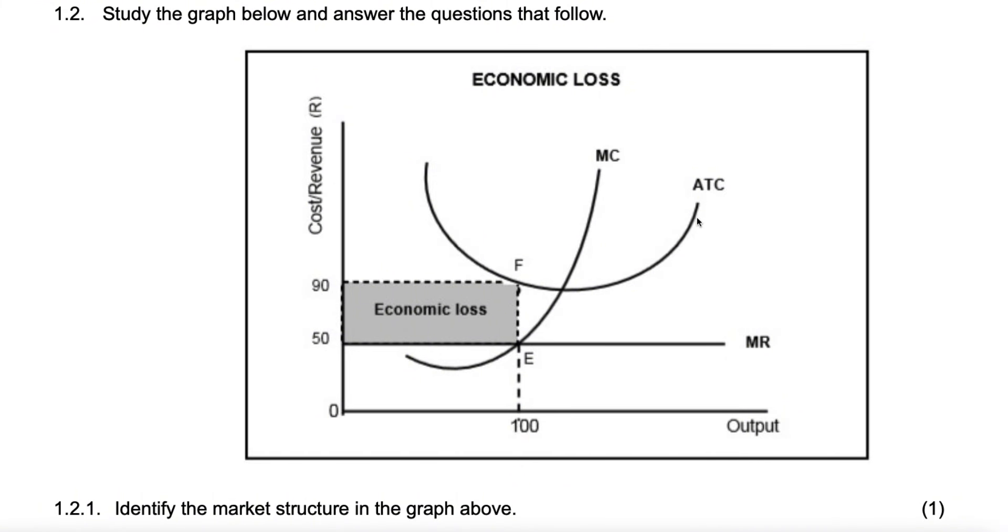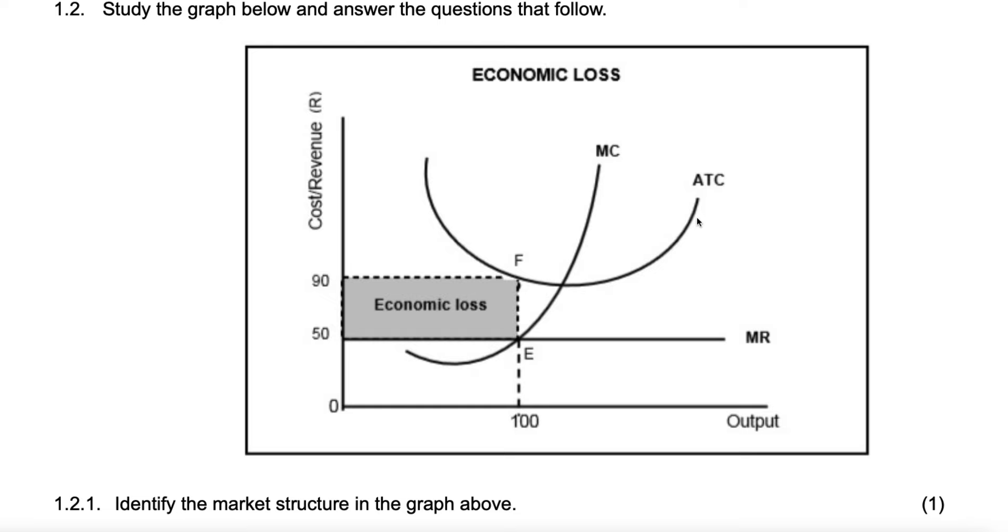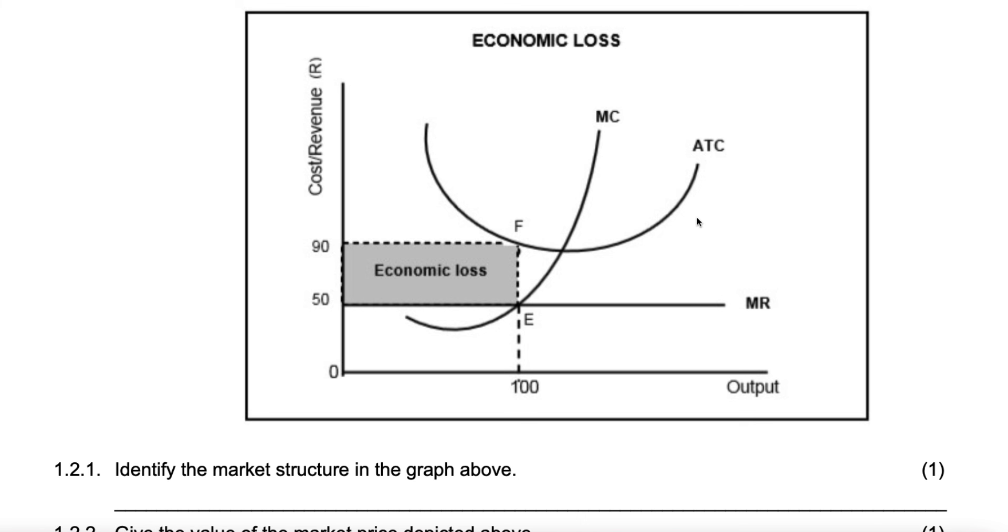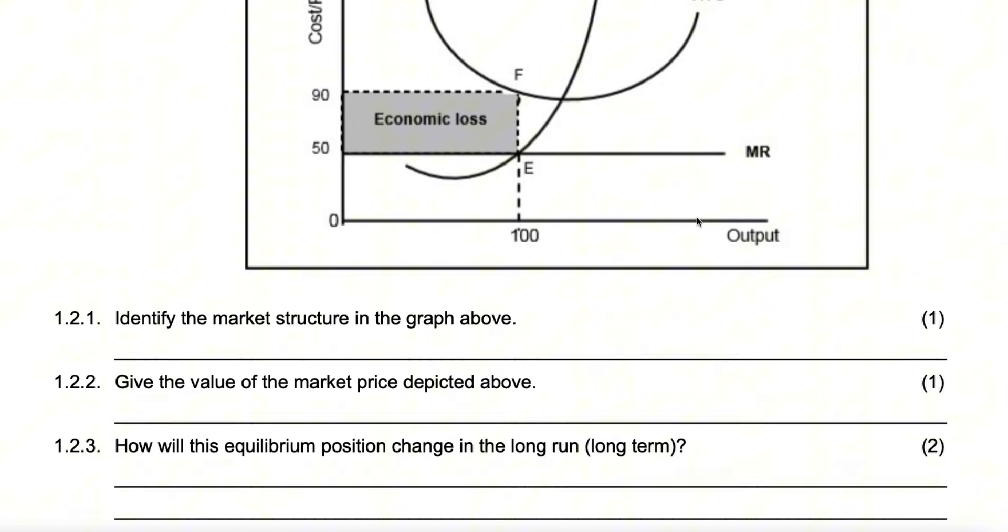I'll start with number 1.2.1. Identify the market structure in the graph above. It is a perfect market. They didn't ask motivation, but how do you know it's perfect? Because AR is horizontal. Okay, but call it demand curve. Or is the demand curve. Because the demand curve is horizontal. Well, that's a good motivation.